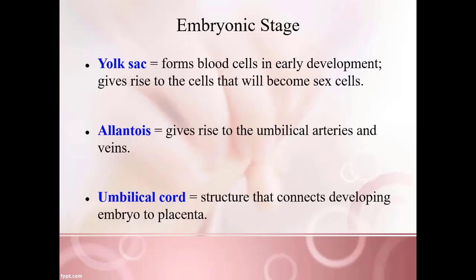Other structures developing at this time include the yolk sac, which forms blood cells in early development and eventually gives rise to the sex cells. The allantois is the structure that gives rise to the umbilical vessels and serves as the respiratory organ for the developing embryo, since the lungs are not yet developed. The umbilical cord is also developing, anchoring the embryo to the placenta — which is why we all have a belly button.